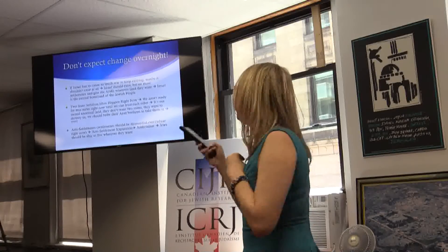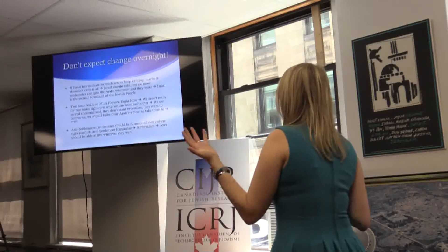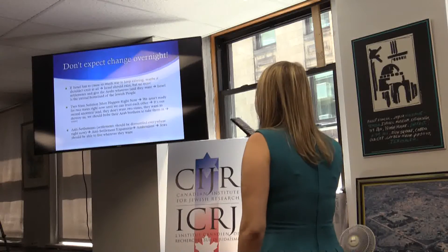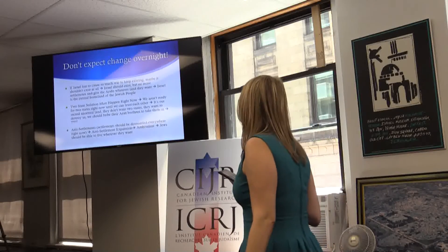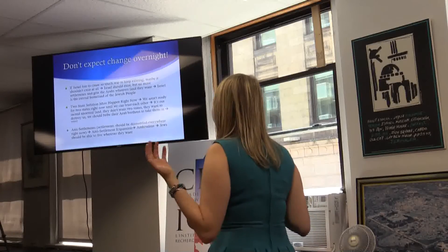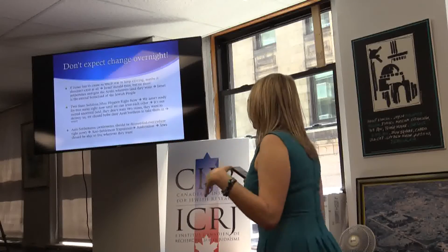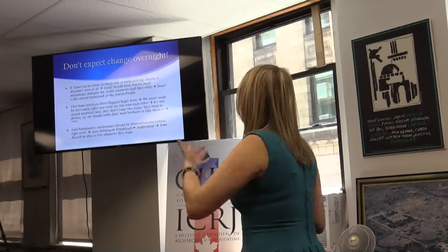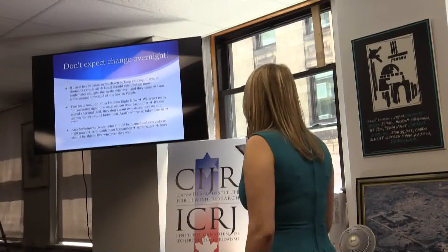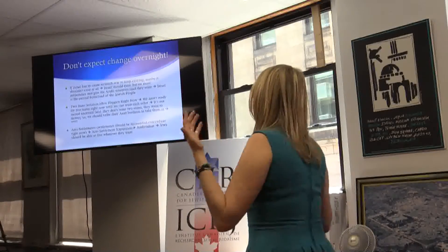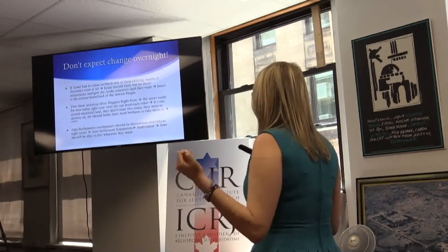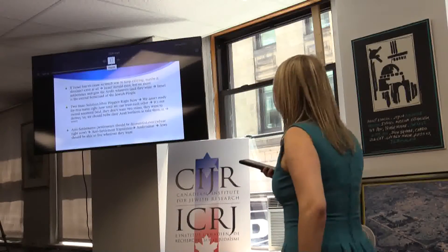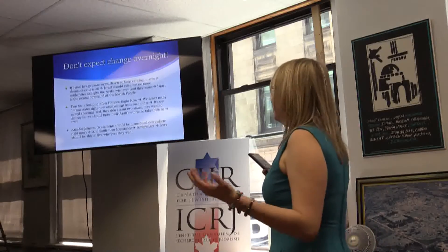On the two-state solution: back then I thought it must happen right now, abandon all settlements, even if we're not ready. Then I realized we're not ready for two states until we can trust each other. Now I think it's our ancestral homeland, they want to destroy us, and we should try to bribe their Arab brethren to take them in because they're corrupt and money talks. I'm still pondering that idea. On settlements: first I was anti-settlement, then anti-settlement-expansion. Now I'm ambivalent and believe Jews should be able to live wherever they want. Change doesn't happen overnight — it really doesn't.